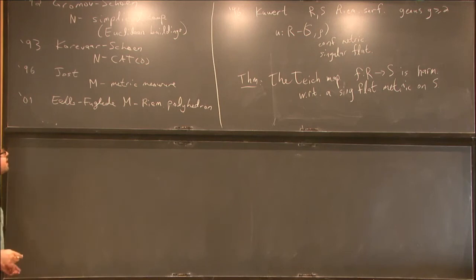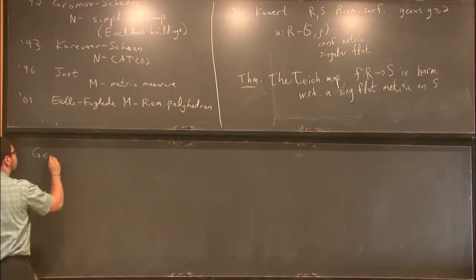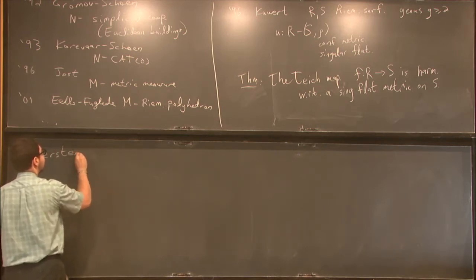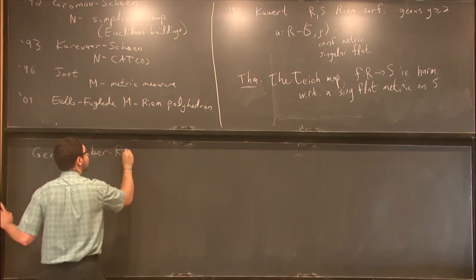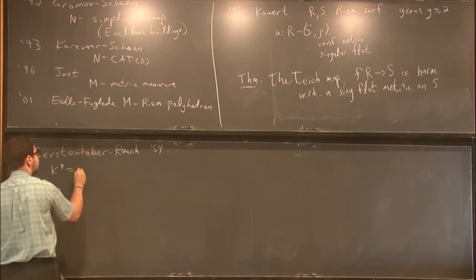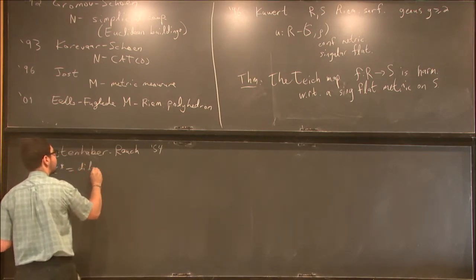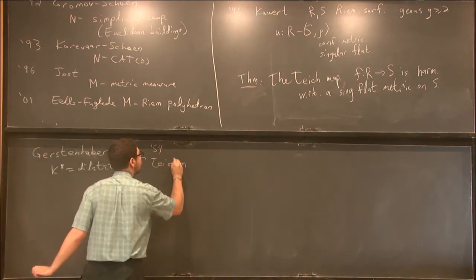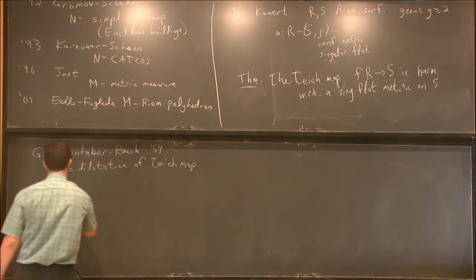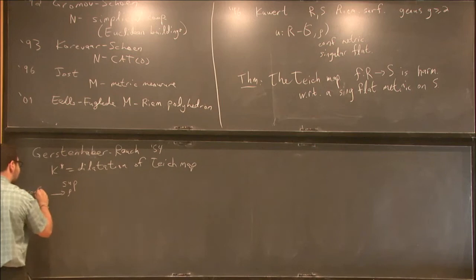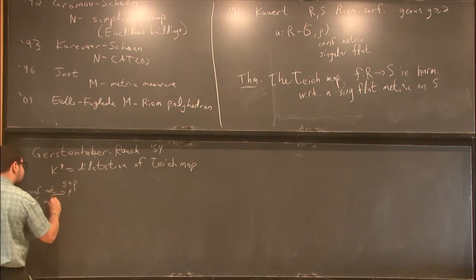This was motivated by Gershund, Haver, and Roach. Gershund, in 54, who said that if k star is the dilatation of the Teichmuller map, then we consider metrics. These are conformal metrics on S with fixed area.